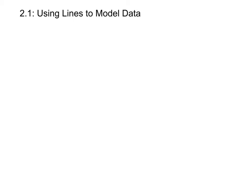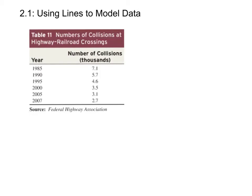In many situations, real-life data can be modeled using straight lines. For example, take a look at the data in this table. It shows the numbers of collisions at highway railroad crossings between 1985 and 2007. You can see that the number of collisions has decreased over that time from 7,100 in 1985 down to about 2,700 in 2007.